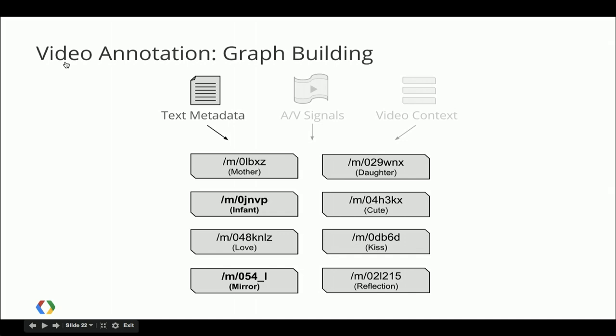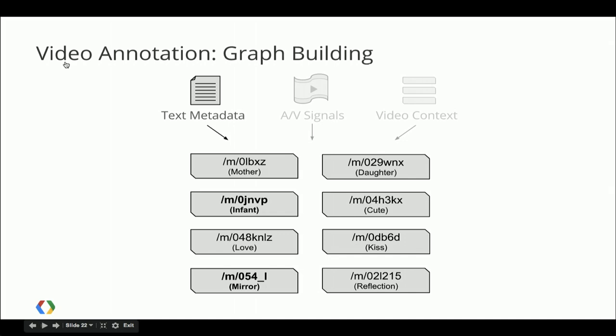Some of these are shown in bold because we assign a score to each concept based on its prevalence in the metadata. For this simplified example, I'm simply giving twice the score for any entities that show up in the title. So now we have some entities, we have some weighting, but we can't quite go ahead and say infant and mirror are what this video is about just because they showed up in the title. In order to figure out what the central entities for the video are, we use links between concepts. We extract these from the open internet where we learn that mother and daughter, daughter and infant, infant and cute tend to co-occur, and we can build a support graph between these concepts.